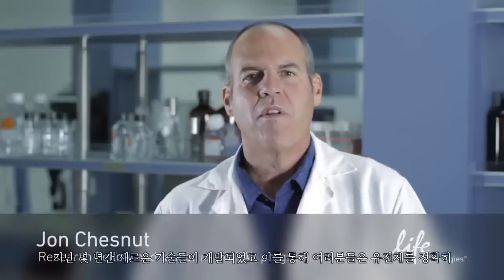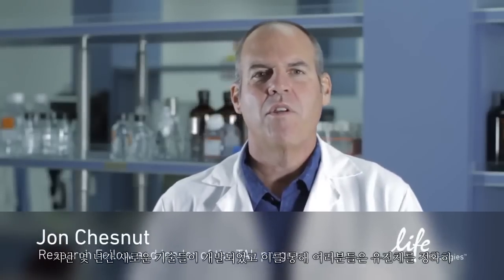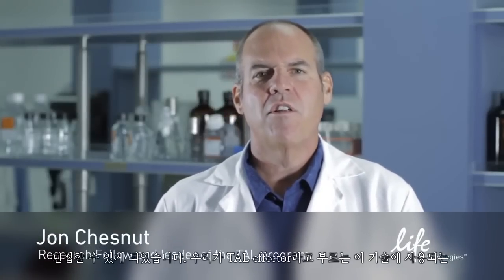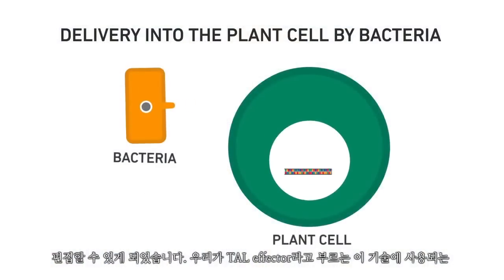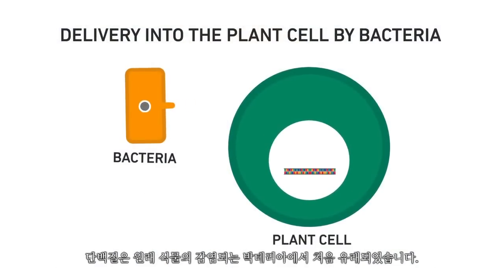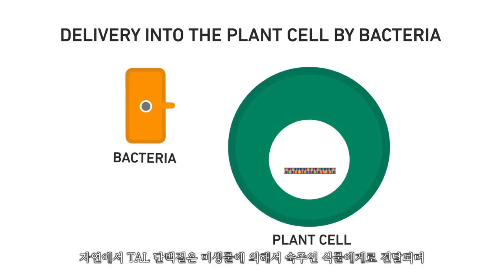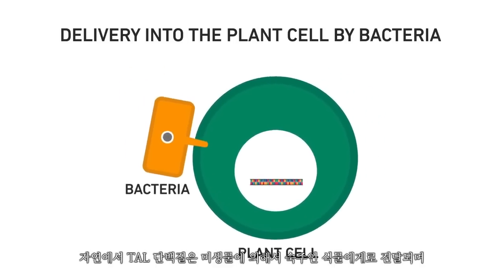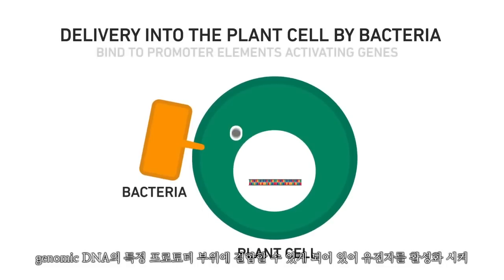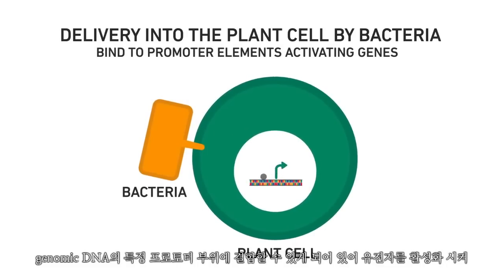A new technology has been developed in the last few years that enables you to target the genome exactly where you want with high precision. These tools, called talifector proteins, were originally identified as bacterial plant pathogens. In nature, TAL proteins are delivered to the plant host cell by the bacterium and are coded to bind to the genomic DNA at certain promoter elements, activating genes and facilitating infection.